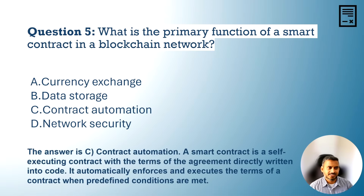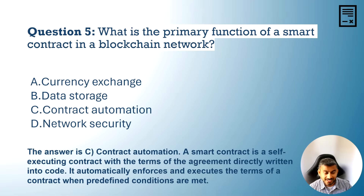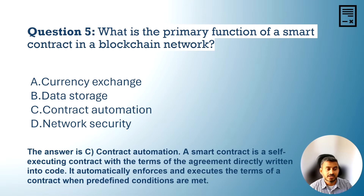The final answer is C. Contract automation. A smart contract is a self-executing contract with the terms of the agreement directly written into code. It automatically enforces and executes the terms of a contract when predefined conditions are met.